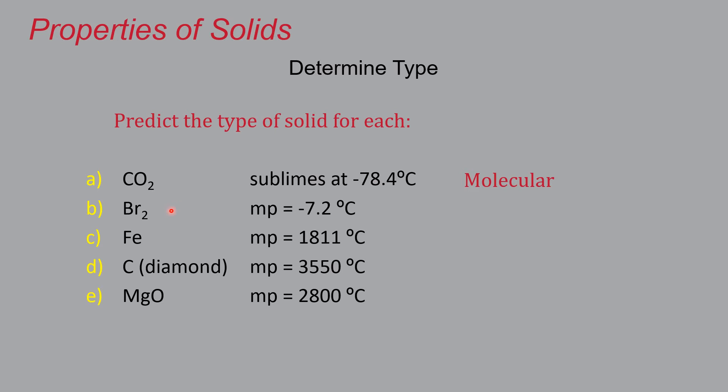So if you look at bromine, Br2, again, this is a non-metal, non-metal combination. So this is a covalent compound. This also has a fairly low melting point, about seven degrees below zero Celsius.